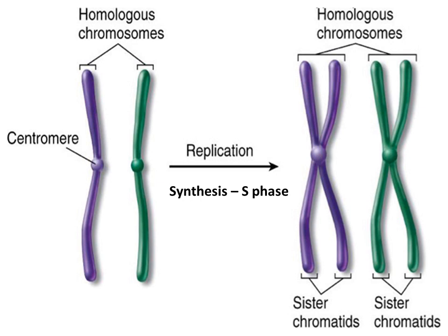At the time of mitosis, cells have already progressed through the S phase of the cell cycle and have replicated their DNA. Consequently, the chromosomes that become visible during metaphase are duplicated structures. Each metaphase chromosome consists of two sister chromatids which are linked by the centromere region.